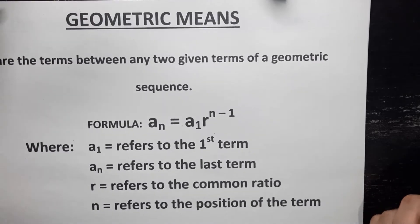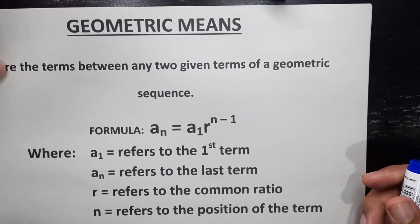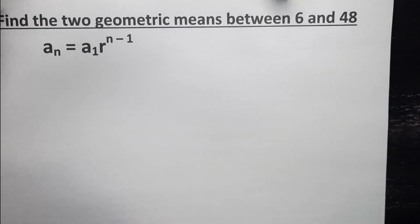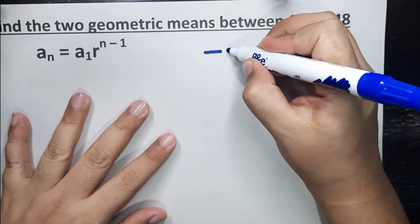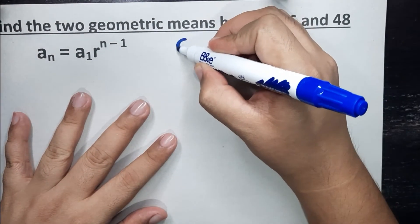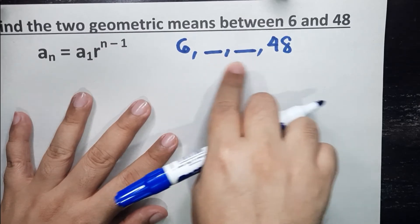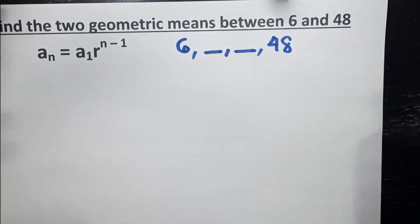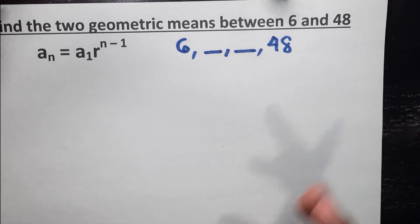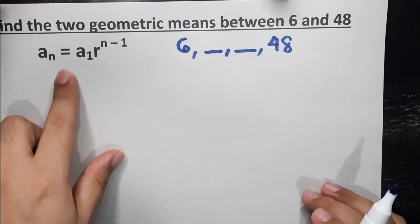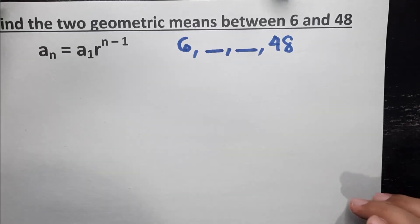Now let's go ahead and have some examples to fully understand what geometric means mean. For our first example, find the two geometric means between 6 and 48. Finding two geometric means means there are two terms between 6 and 48 — these two missing terms are the geometric means. We cannot identify them because we don't know the common ratio, so we'll solve using the original formula of the geometric sequence.